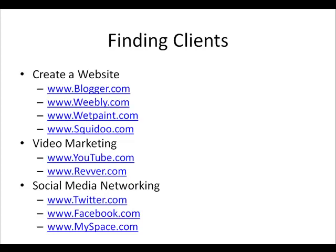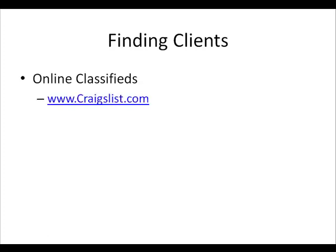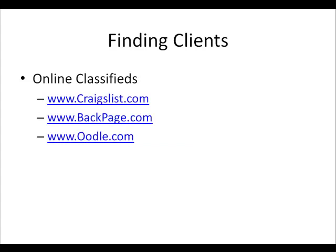Online classifieds are another great resource. Craigslist.com is one of the highest traffic websites on the internet — you can use it two ways: search the job listings for people looking for your services such as web design or article writing, and also post a classified in the small business ads section describing your services. Do the same on Backpage.com — browse the job boards and post in the service offerings section. For Oodle.com, look for job offers and make a post about your services as well.